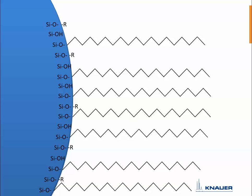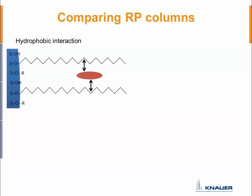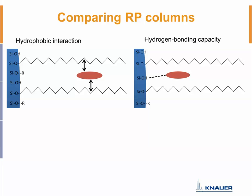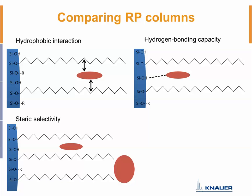When comparing reversed phase columns, there are three key interactions to keep in mind. First is the hydrophobic interaction — the interaction of your analyte with the hydrophobic C18 chain. Second is the hydrogen bonding capacity of your phase, where places on the silica gel itself react with your analyte through hydrogen bonding, which is also very important. Third is the steric selectivity of your phase — if C18 chains don't let bigger molecules get in between them, that is steric selectivity.